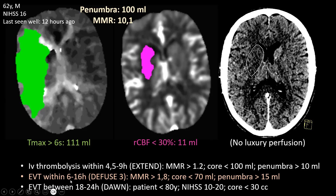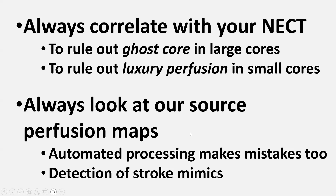Now imagine this patient had presented at 20 hours — we would have to use the DAWN criteria. Is this patient still eligible for endovascular thrombectomy? Yes: the patient is younger than 80 years old, has an NIHSS score of 16 (between 10 and 20), and the DAWN criteria state that thrombectomy can be given if the core is smaller than 30 cc — which is the case in this patient.